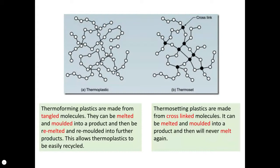It also means that once it's been moulded into a product and used, when it comes to the end of its life, it can be remelted and remoulded into another product. This is all because a thermoforming plastic is made of long strands of polymers that are not connected together, so thermoplastics can be easily recycled with the application of heat and remoulding.